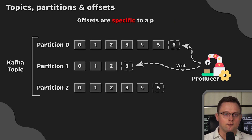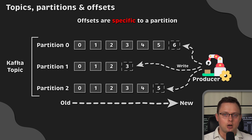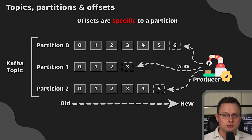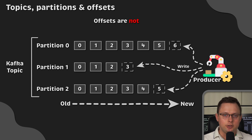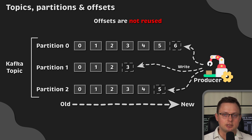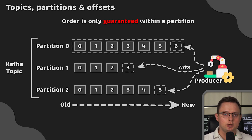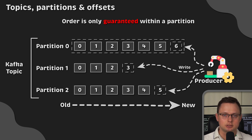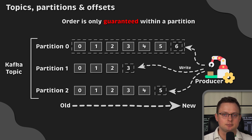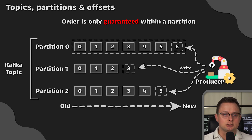Offsets only have meaning for a specific partition — offsets are repeated across partitions. So offset 4 in partition 1 represents a message, but it isn't the same data as offset 2 in partition 0. Offsets won't be reused even if the previous messages have been deleted; they keep increasing incrementally. The order of messages is guaranteed only within a partition, but not across partitions — messages within each partition have increasing offsets, meaning they are in order, but across partitions we have no control.